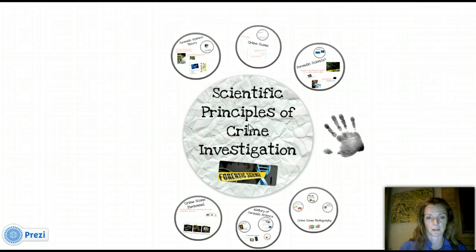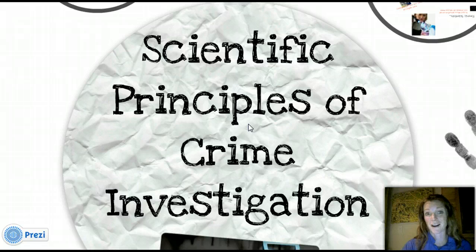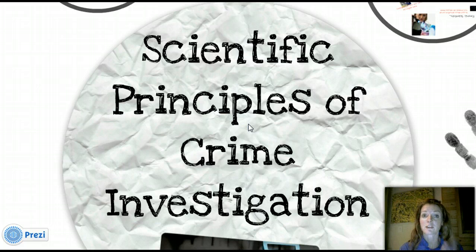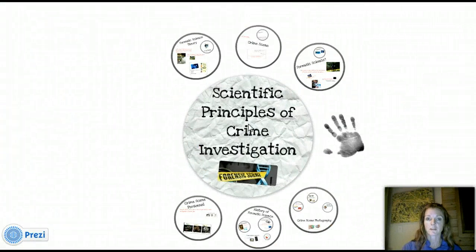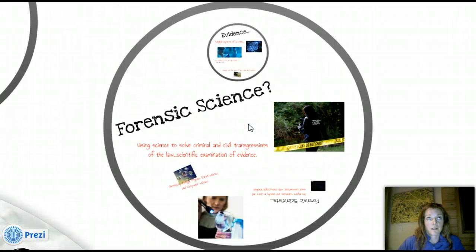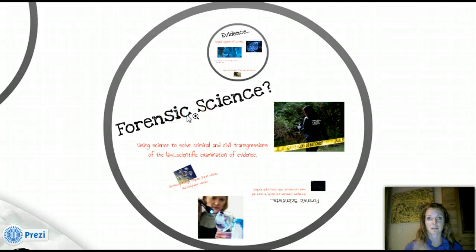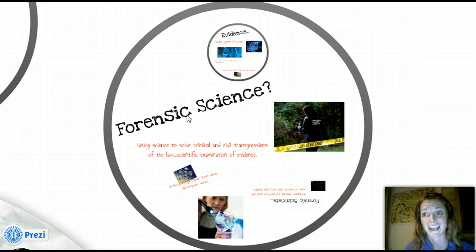So let's begin. Scientific principles of crime investigation. I am excited about this class — it's pretty cool to talk about crime scenes and how science relates to it. So, forensic science: the first thing we're going to talk about in your first lesson is forensic science. What is that? Sometimes people's first thought is CSI — yeah, that's what forensic science is. And to a point, it is. There are a lot of aspects to it.